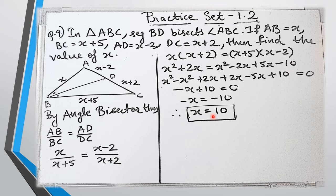The key things needed are: first, recognizing which theorem to use; and second, remembering how to multiply two binomials or a monomial and a binomial. Then you arrange like terms, cancel, and perform the required subtraction. It's very straightforward once you have those basics.